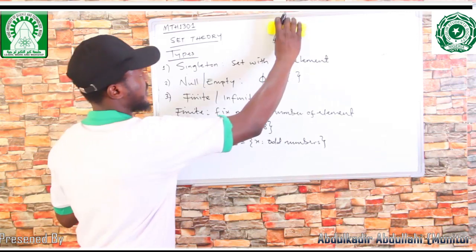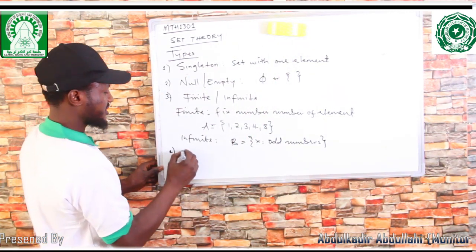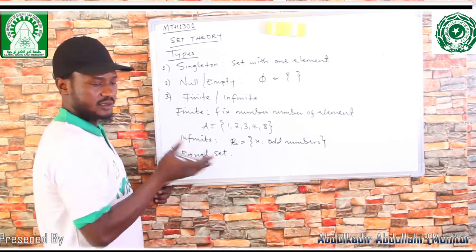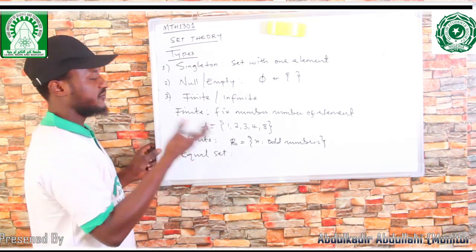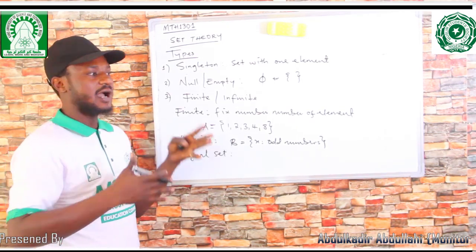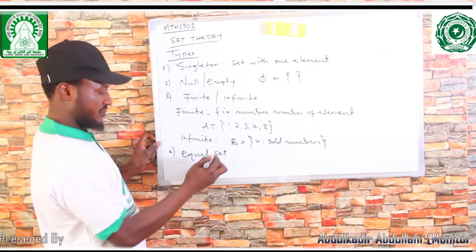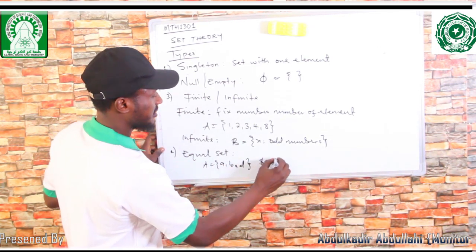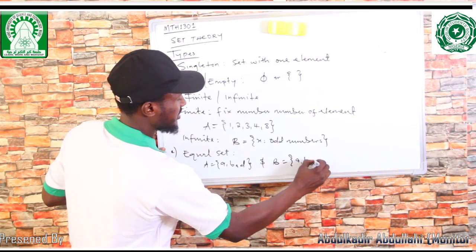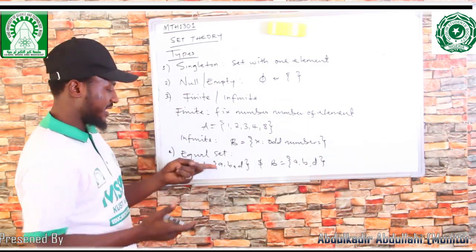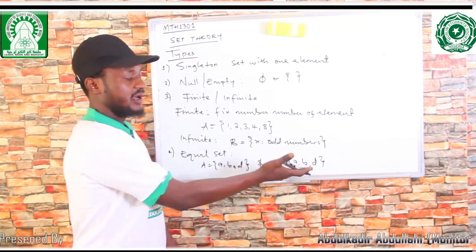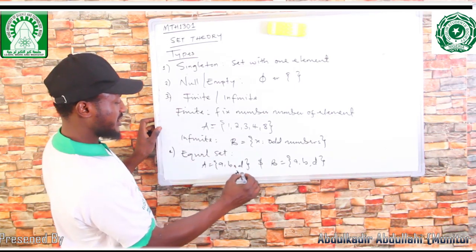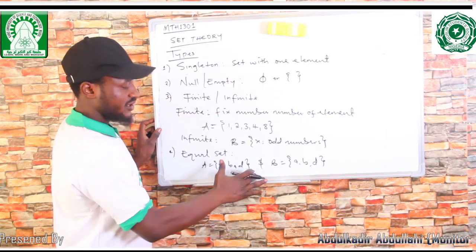The next type after infinite is what we call equal sets. Equal — if two sets have the same number of elements and the same elements, then they are said to be equal. For instance, if set A = {A, B, D} and set B = {A, B, D}, then I can conclude that A = B, because whatever element is in A is also in B. So it's called an equal set, denoted as A = B.